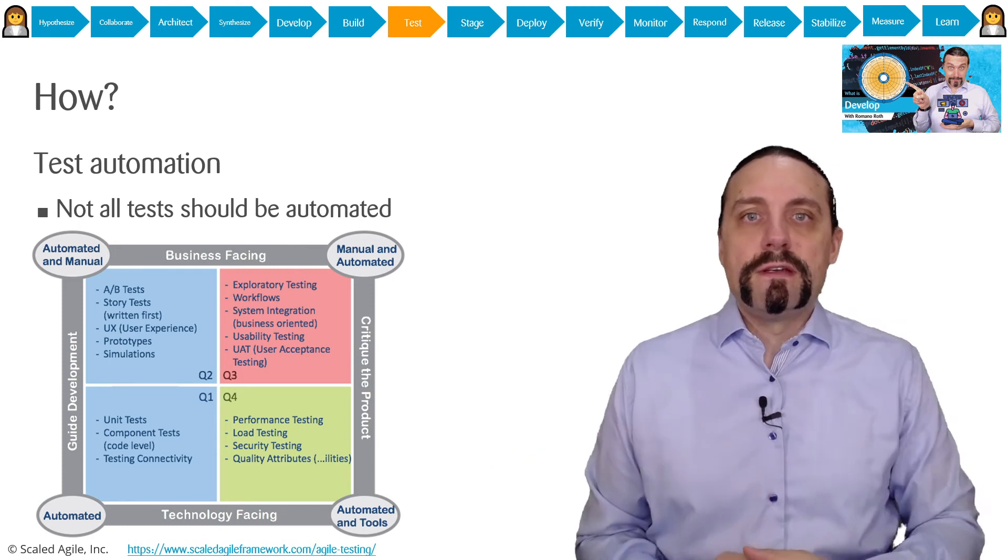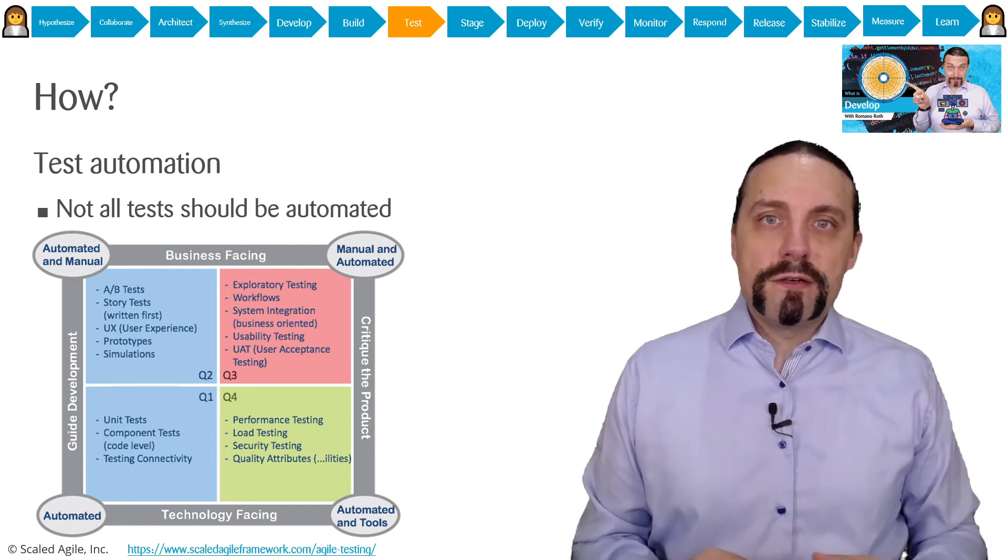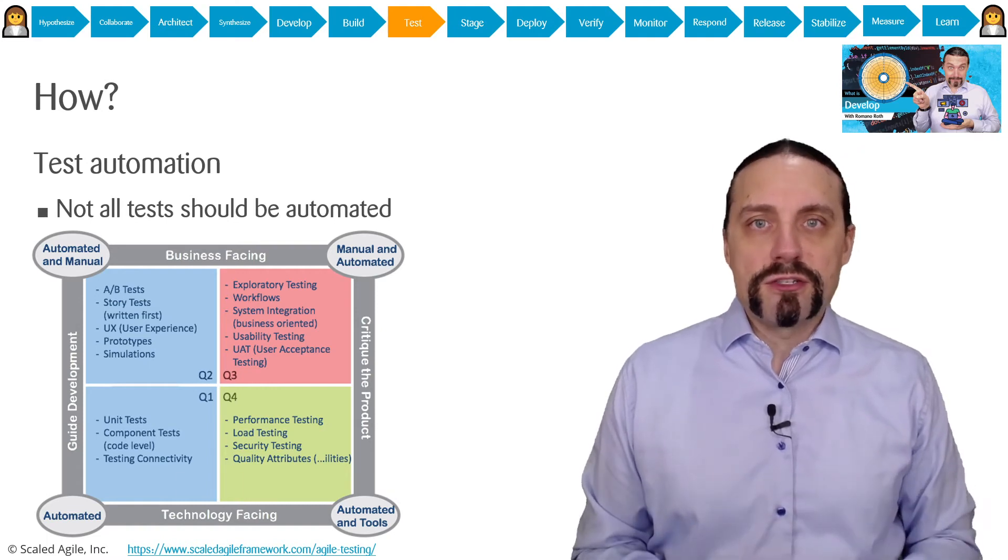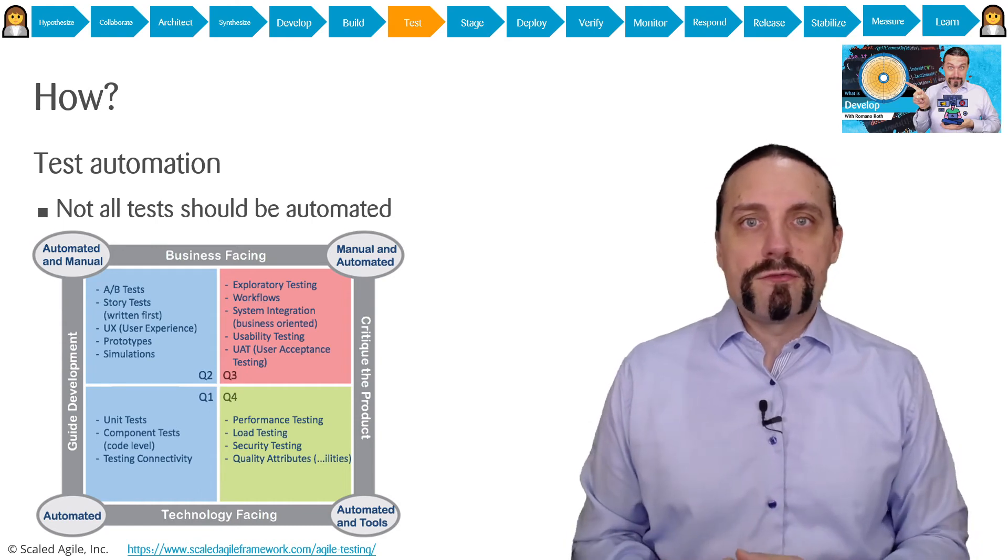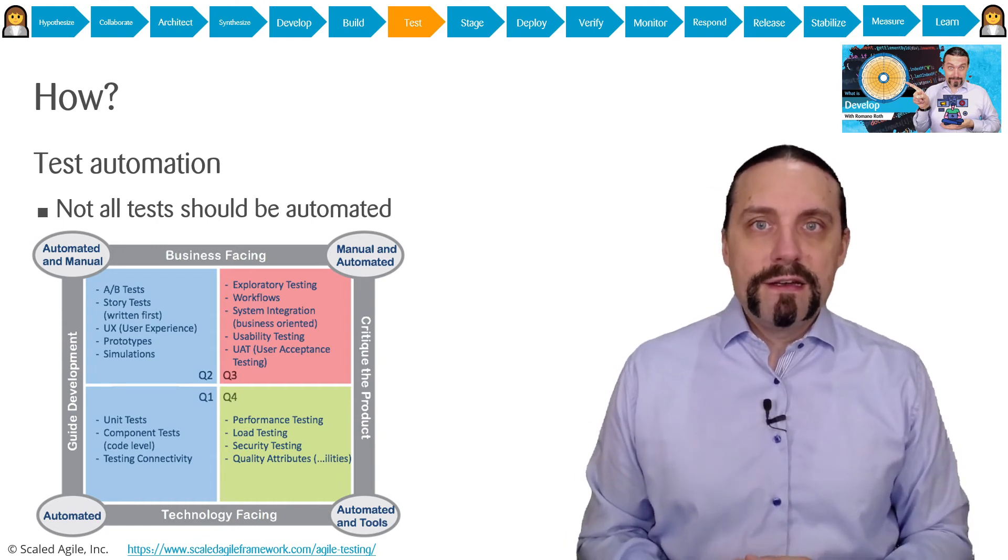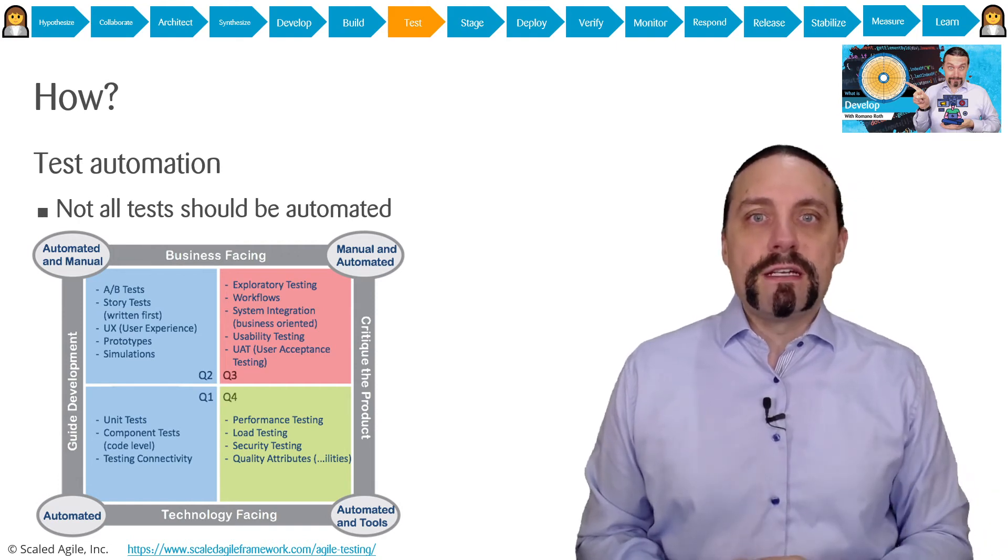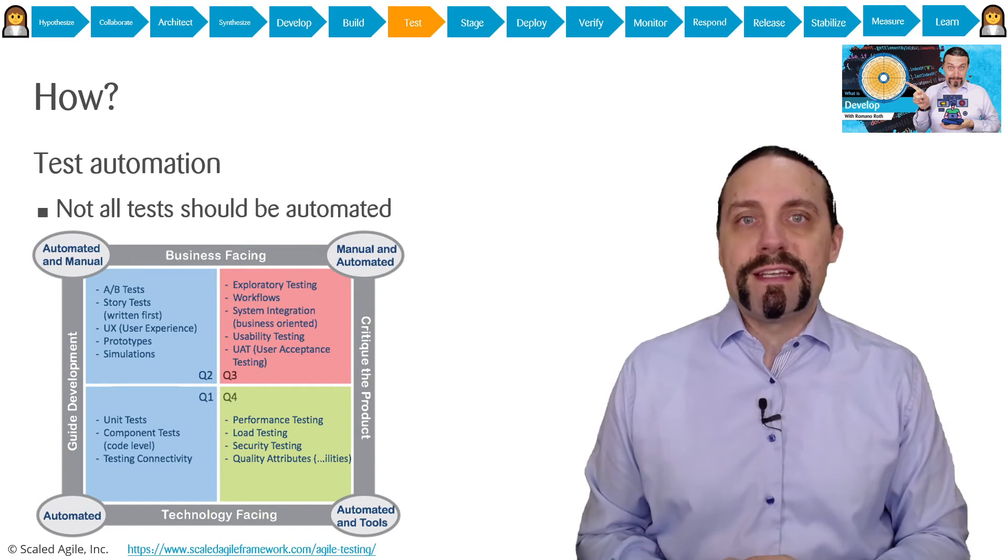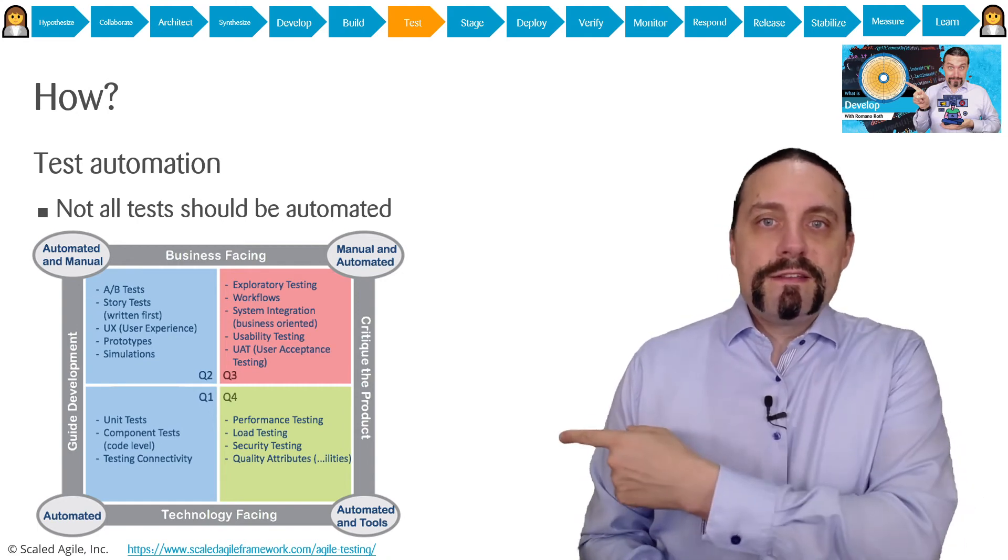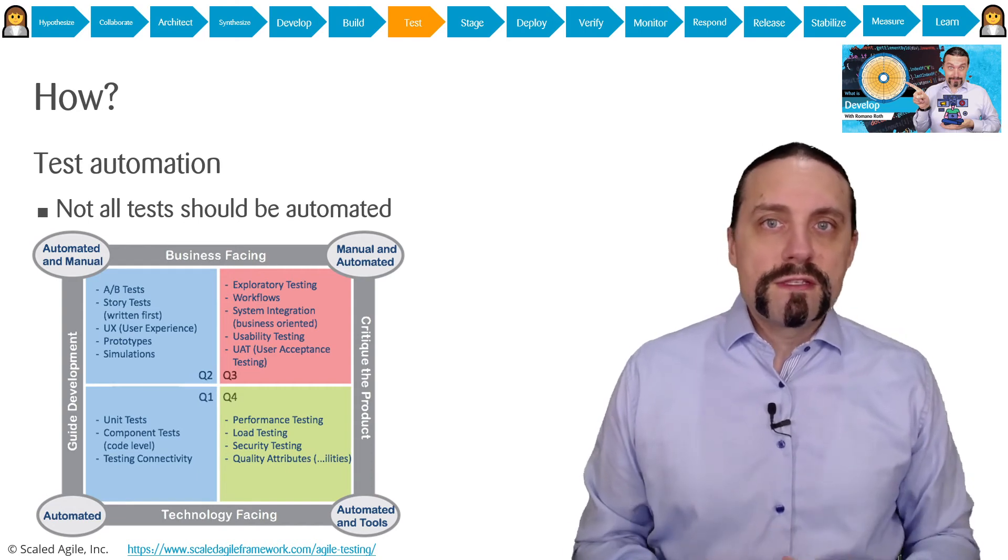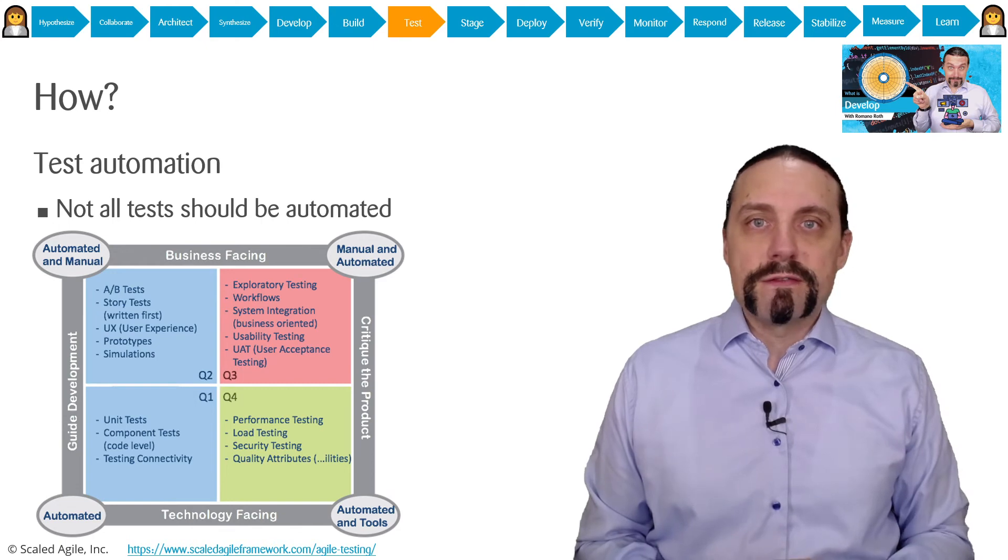Next we move down into area Q4 where we execute all of the non-functional tests. Here we take the non-functional requirements which we have defined and which are constrained on the backlog and we execute non-functional requirements tests against our system. In this area we have quite a lot of tools which we can use.